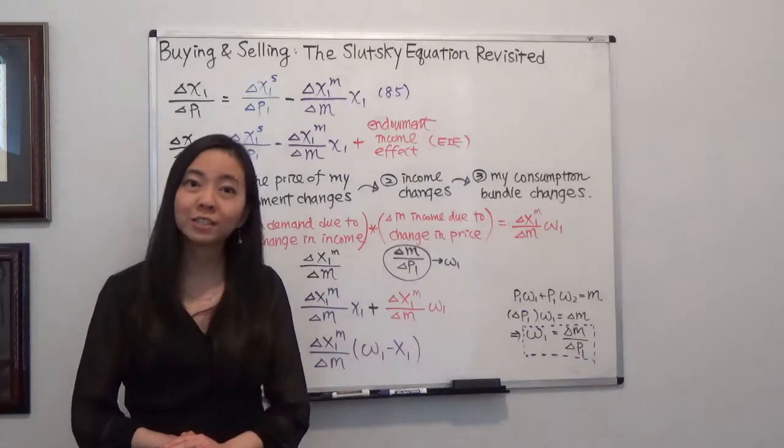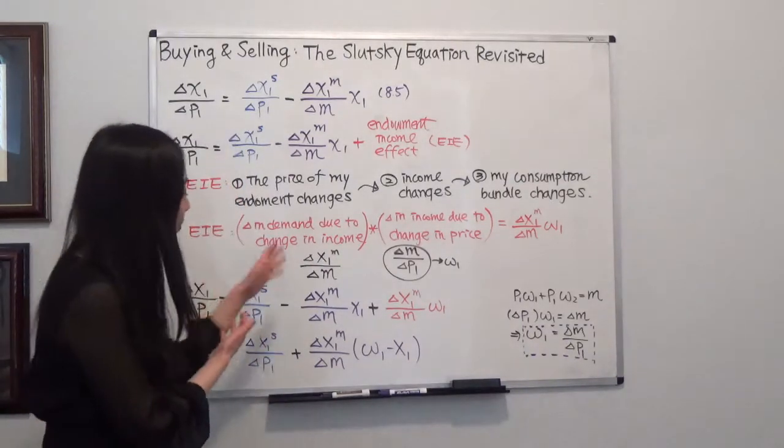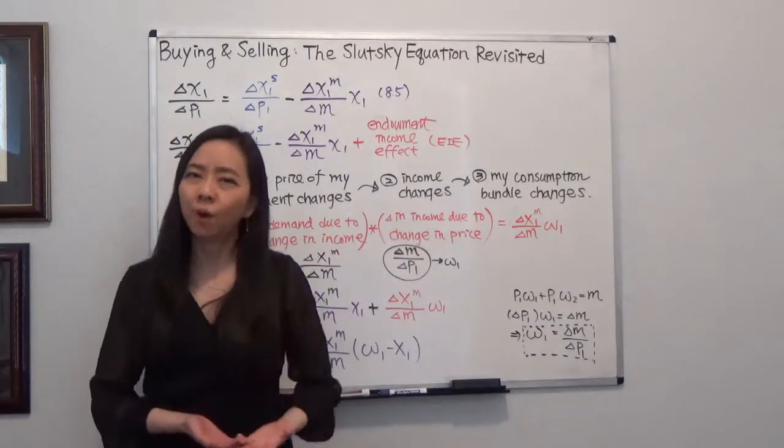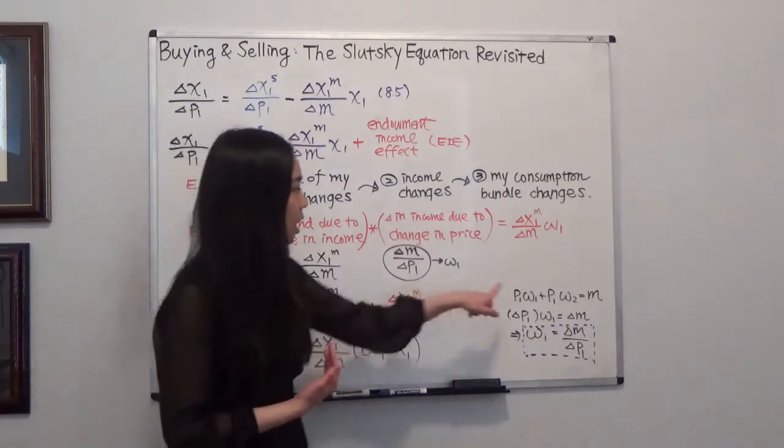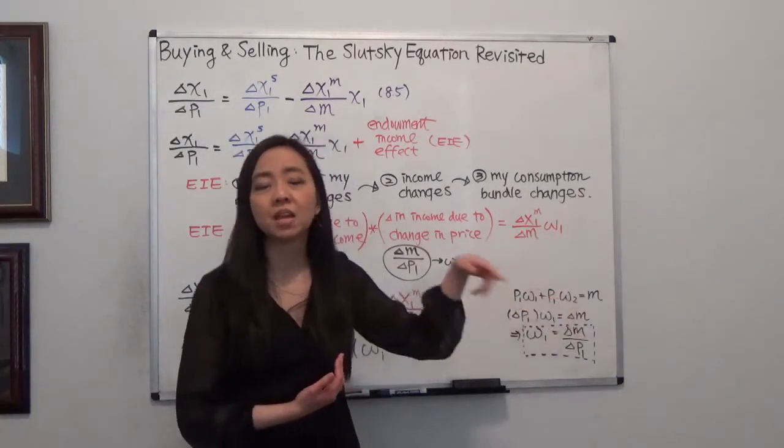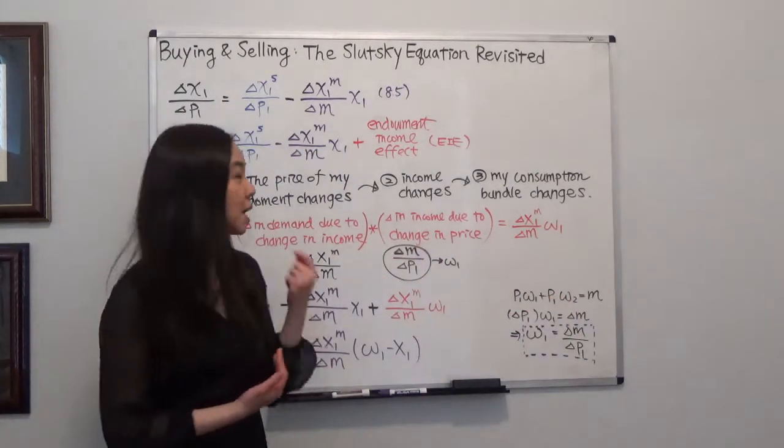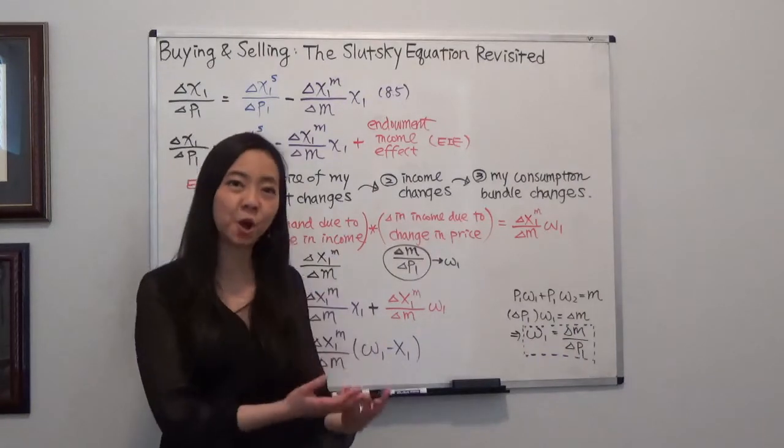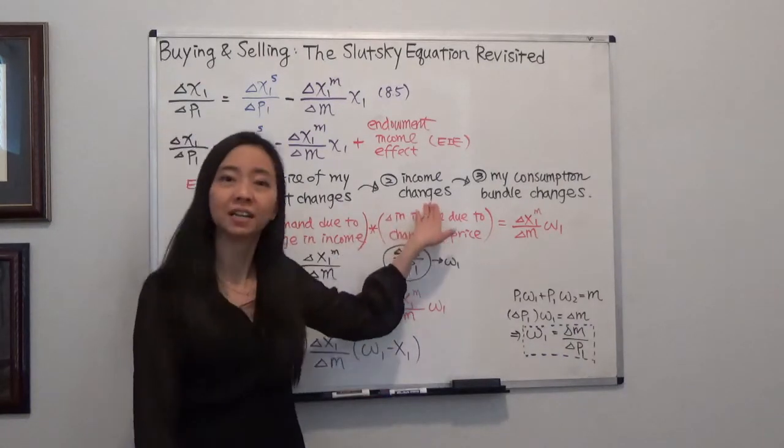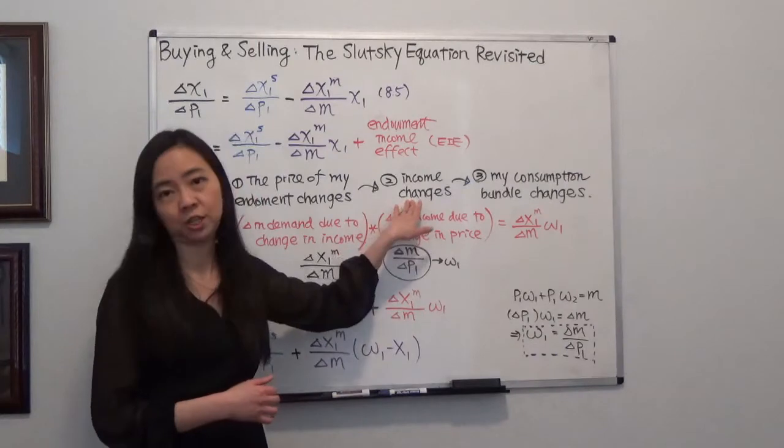We know when the price of good 1 changes. First of all, that's going to change my income. Why is that? Because we have endowment omega 1 and omega 2. Now the price of good 1 changes. That means when I sell my endowment, I'm going to have a different income.